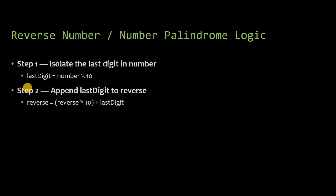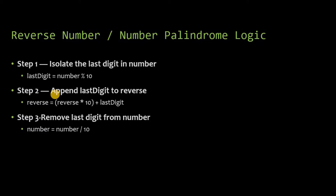Step 2 is to append the last digit to a reverse number. The reverse number initially will be 0. You append whatever digit you extracted from the number to the reverse number. Then remove the last digit from the original number and repeat the process until the number value becomes 0.